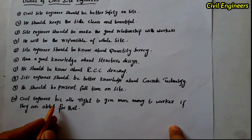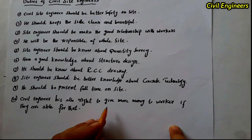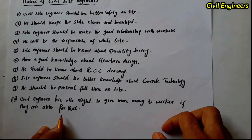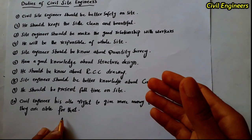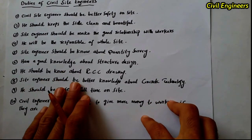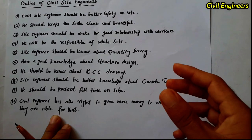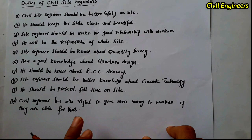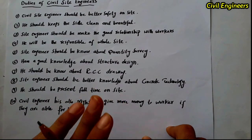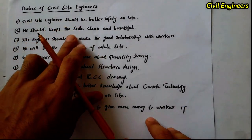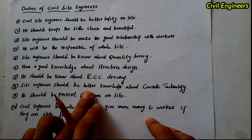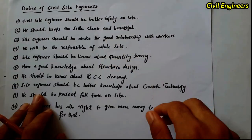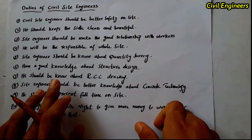Tenth: the civil site engineer also has the right to give more money to workers if they are capable and performing well. So the site engineer should be present on site, and if a worker is doing good work, he has the right to reward them with more pay. These are the useful duties that should be present in a site engineer. Don't forget to like and share this video with your friends. Thanks for watching, see you in the next video.